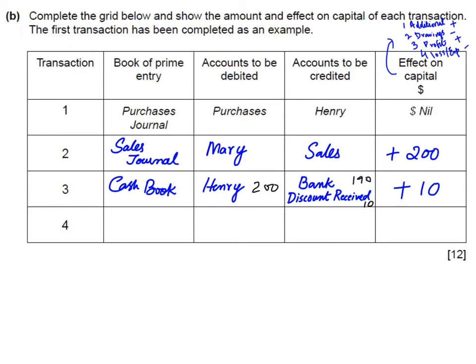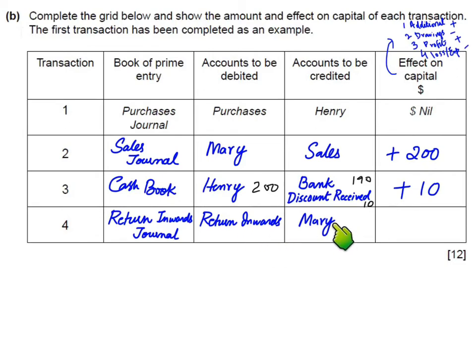Transaction 4: Mary returns goods with a selling price of 50. The book of original entry is the return inward journal (also called the sales returns journal). The entry is return inward debited and Mary's account credited, for 50. We now need to find the effect on capital, which is slightly more complex.